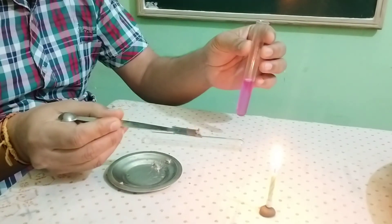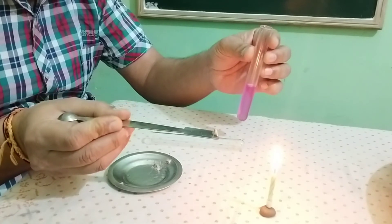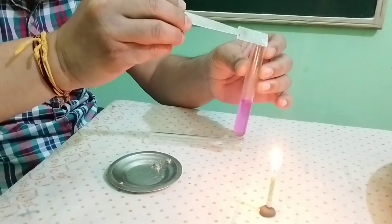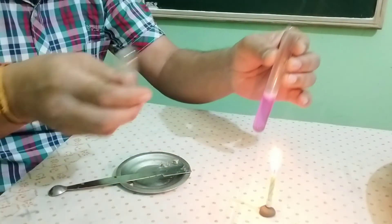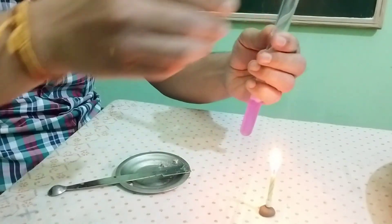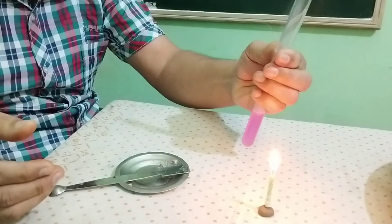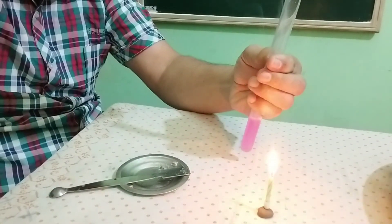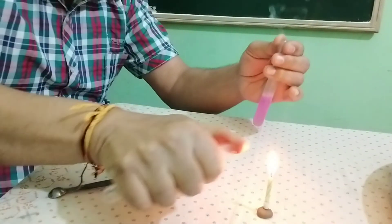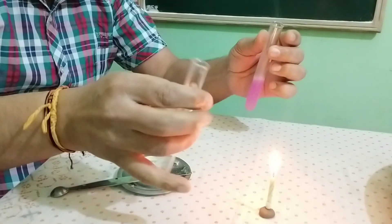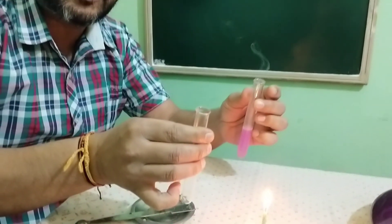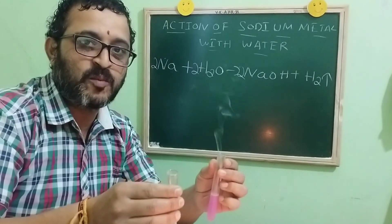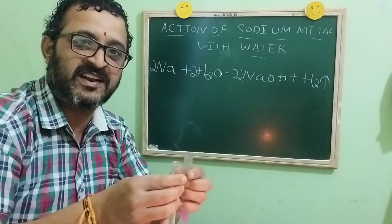I have taken a small piece of sodium and I am going to add it into a test tube containing water. The liberation of hydrogen starts, and I am going to collect this hydrogen gas in a test tube. How do you confirm whether this gas is hydrogen? This pop sound indicates that there is a liberation of hydrogen gas. Hope you have understood. Thank you, children. Namaste, everybody.